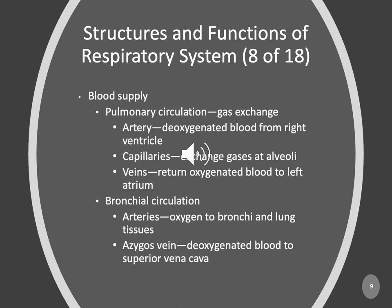Moving on — I say these things because now you have the blue and red blood in your head and you're picturing it, which is great because these are the cartoons I want you to color in your head. Gas exchange: deoxygenated blood from the right ventricle passes through capillaries, gives gas exchange to the alveoli, pops back — veins return the oxygenated blood to the left atrium. Within the bronchial circulation, arteries take oxygenated blood to the bronchi and lung tissues, and the azygos veins take deoxygenated blood to the superior vena cava.